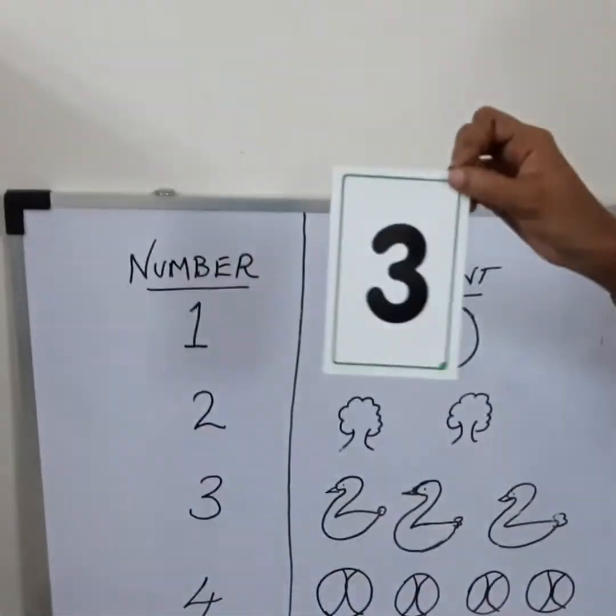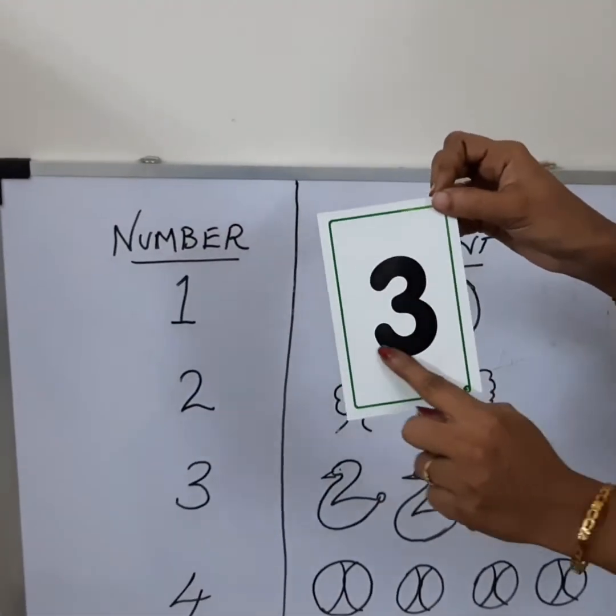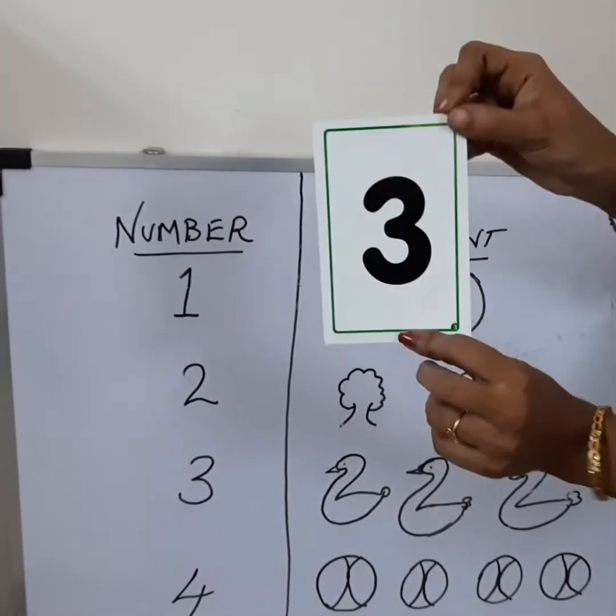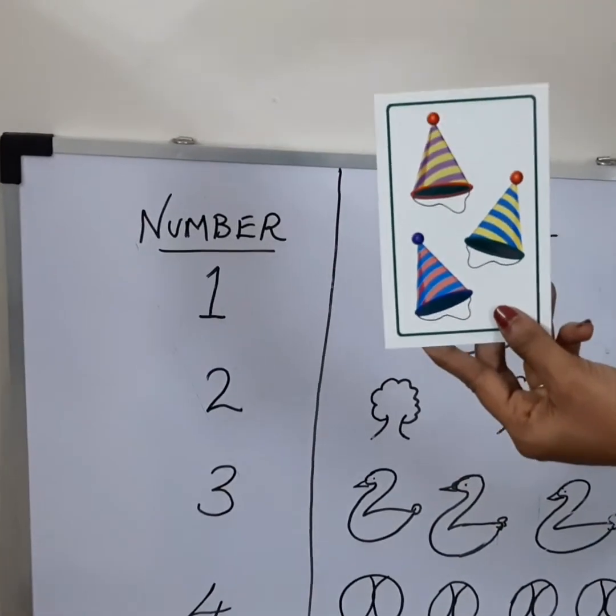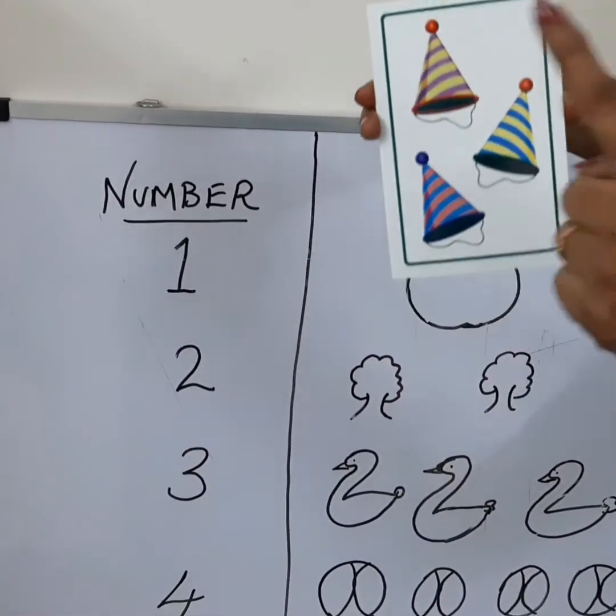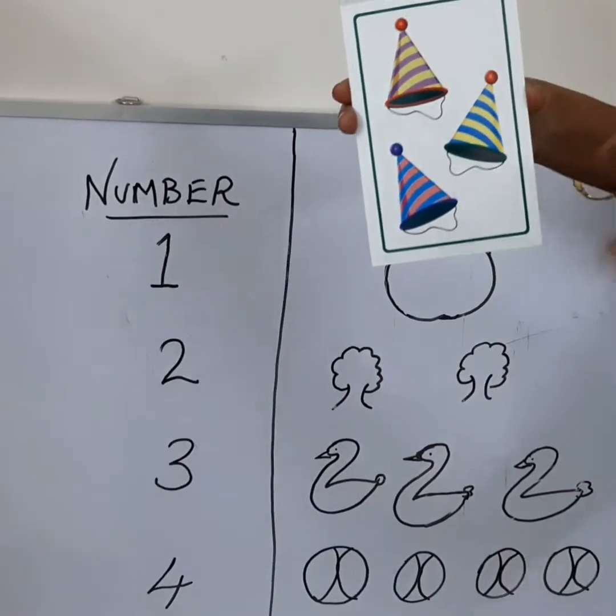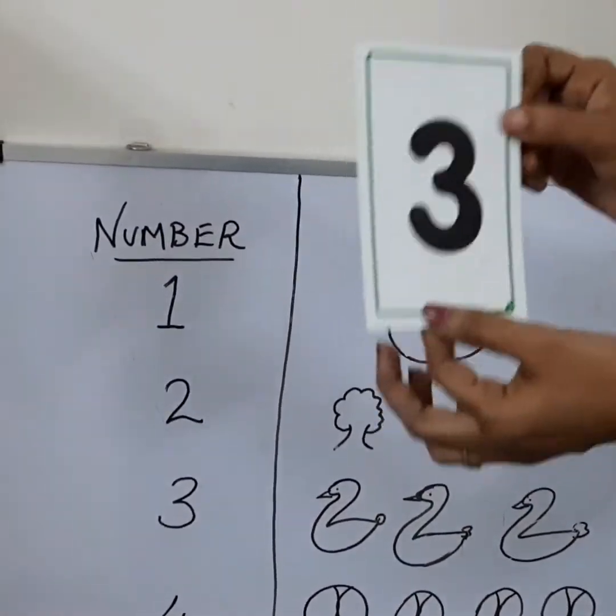Next is 3. 3 goes like this. This is number 3. We will turn and see. Yes! Caps. 1. Count it. 1, 2, 3. 3. 3 in number. This is number 3.